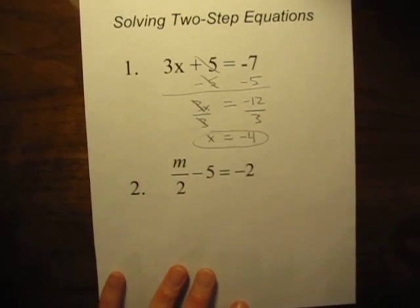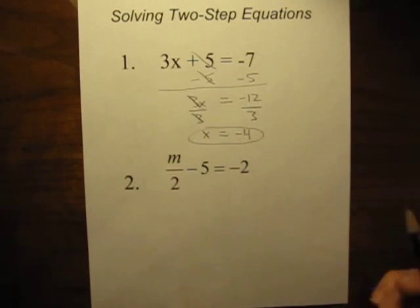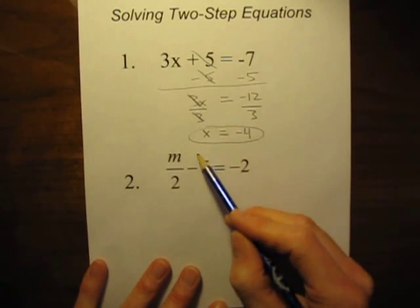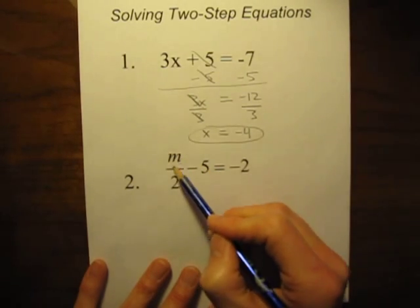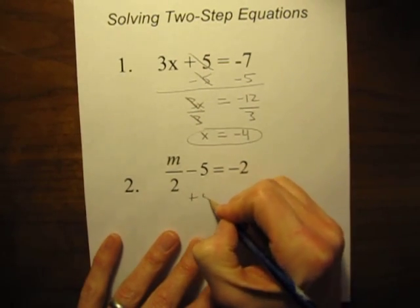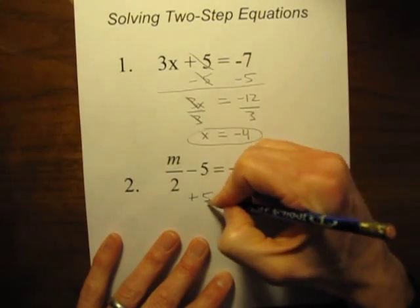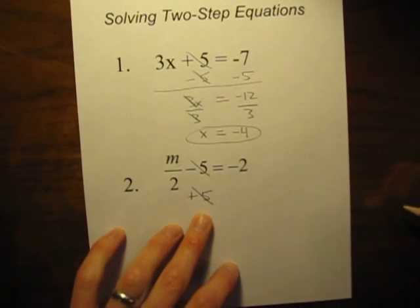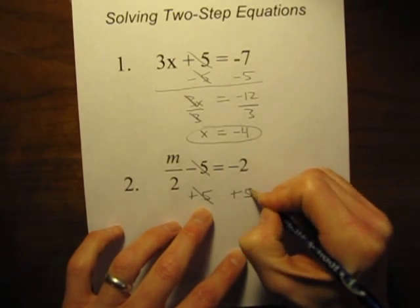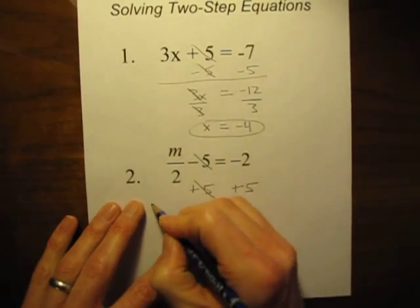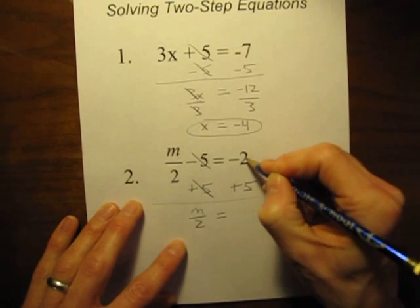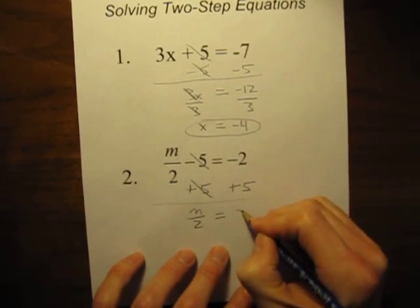In the next problem we have two things we need to get rid of again, so this is still a two-step equation. We want to get rid of this divided by two, and we want to get rid of this minus five. Let's start by getting rid of this minus five — our goal is to get m all by itself. The opposite of minus five is plus five, the opposite of subtraction is addition. Negative five plus five cancels to zero. Whatever we do to the left side — adding five — we do to the right side as well. So rewriting what's left: m divided by two equals negative two plus five, which equals three.